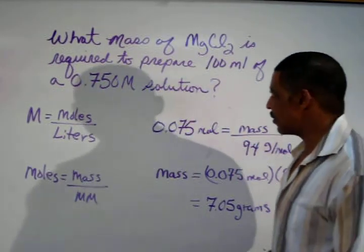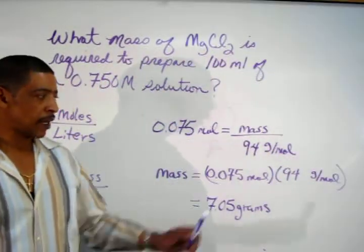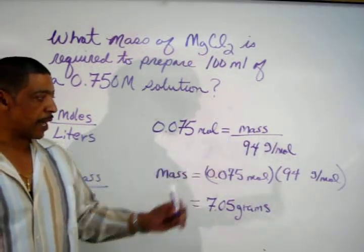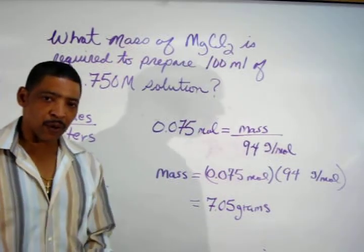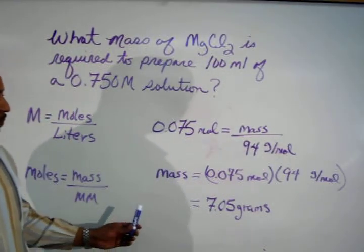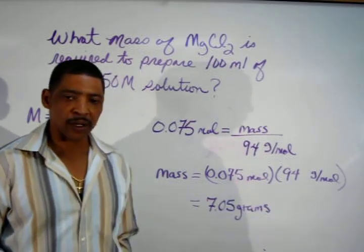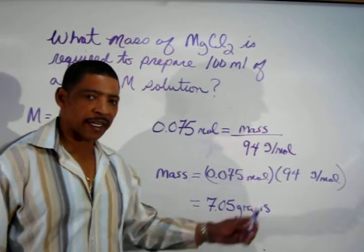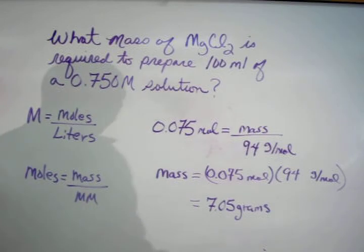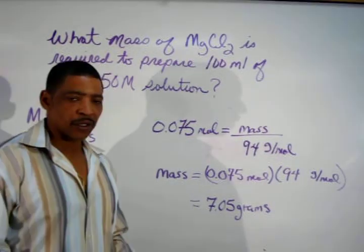The molar mass of magnesium chloride was found to be 94 grams per mole. Solving for mass, simply multiply through by 94. This gives a final calculation of 0.075 mole times 94 grams per mole. Clearly, moles will cancel. This generates a final answer where the mass is determined to be 7.05 grams.